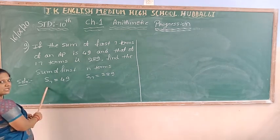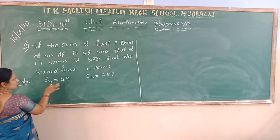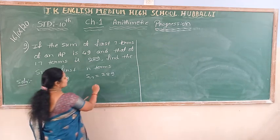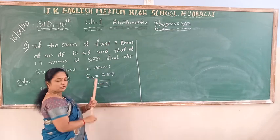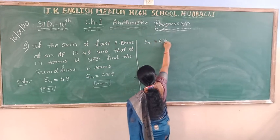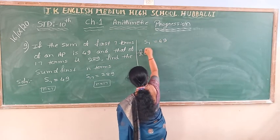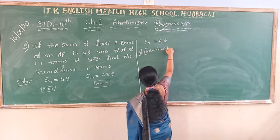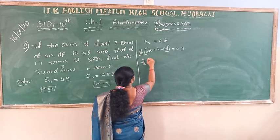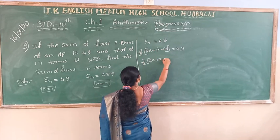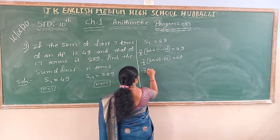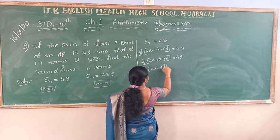For the sum formula, SN is equal to n by 2 into 2A plus n minus 1 into D. I will use this formula. Here SN is equal to 49, so substituting n equal to 7: 7 by 2 into 2A plus 7 minus 1 into D is equal to 49. This gives 7 by 2 into 2A plus 6D is equal to 49.